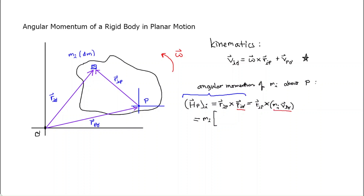Let's expand this out. The mass m_i is a scalar and comes through the cross product as a scalar multiple. So what I've got is r_ip cross each of the two terms for v_io. Using the distributive rule: first r_ip cross (omega cross r_ip), and then plus r_ip cross v_po.